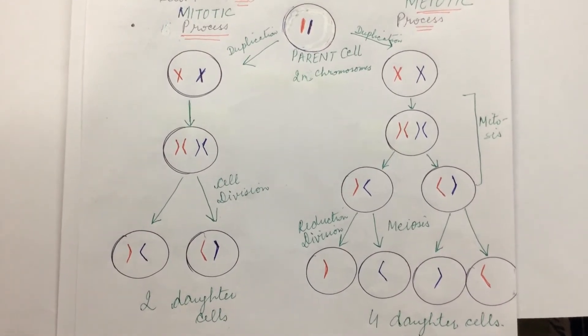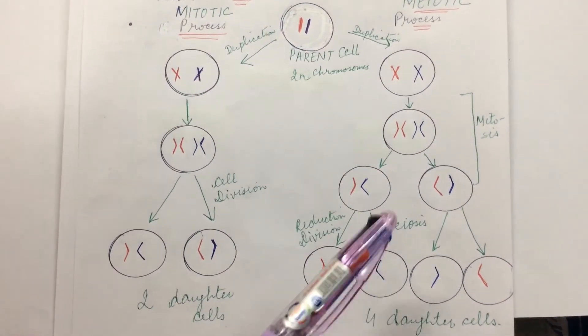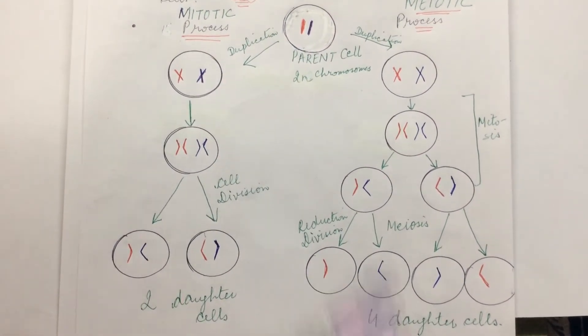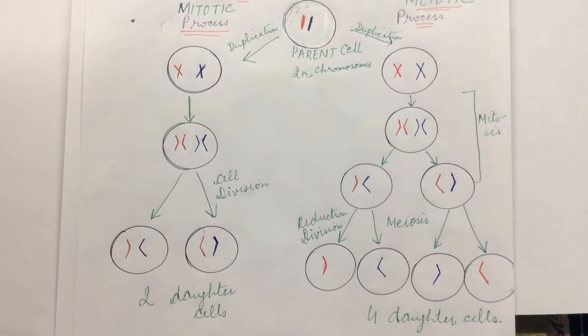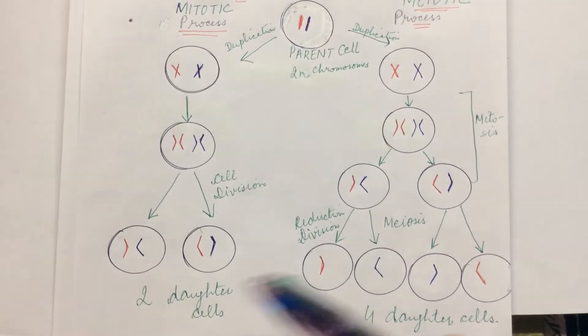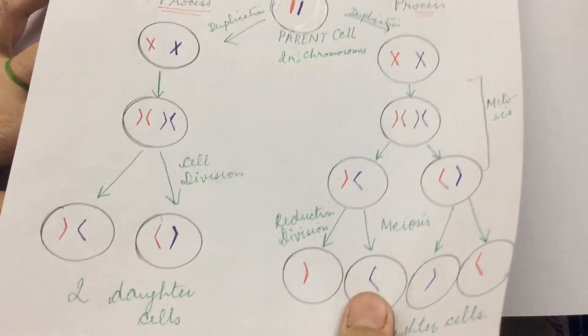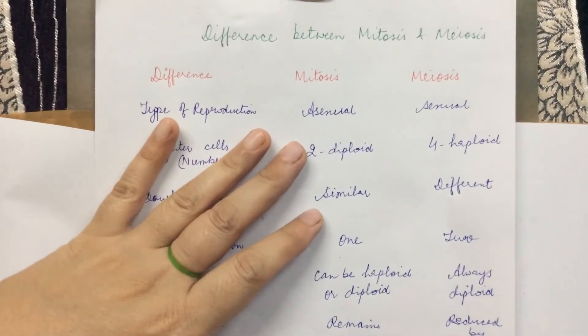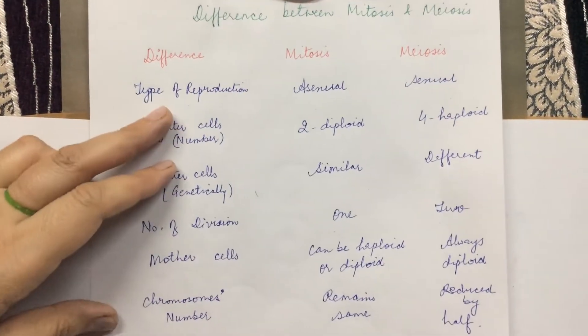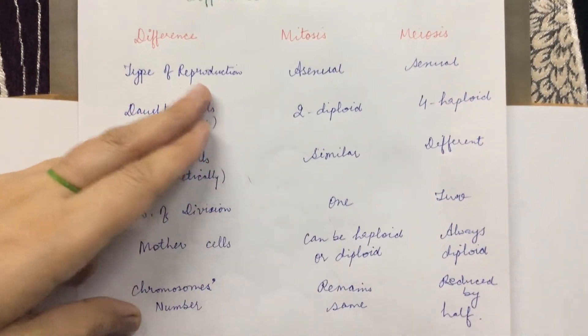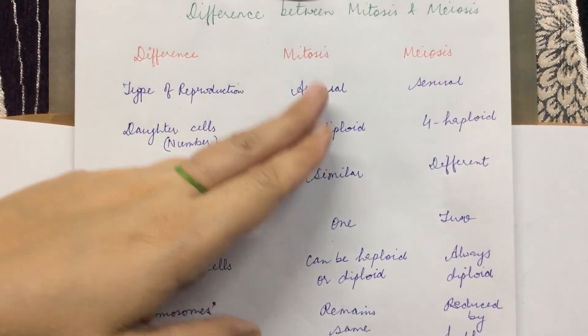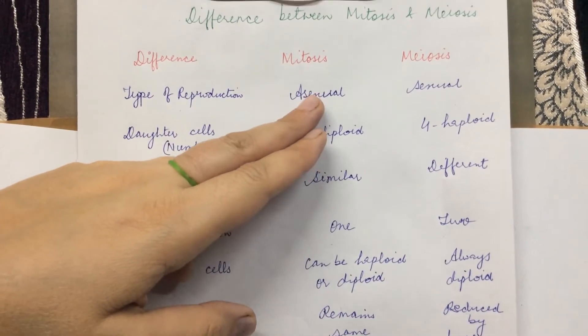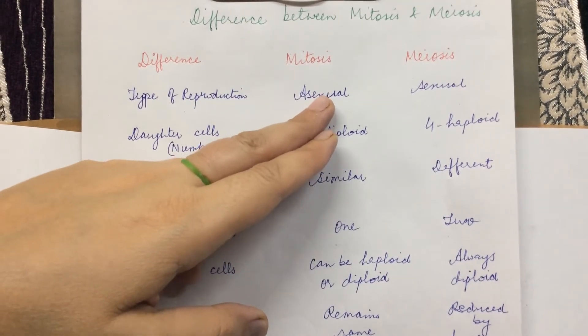Meiotic division is therefore very important in sex cells or gametes or germ cells, to maintain the same chromosome number by the end of the reproduction process. Now let's briefly discuss the differences between mitosis and meiosis. In terms of type of reproduction: mitosis is asexual reproduction because it takes place in somatic cells and unicellular organisms where sex cells are not involved, but meiosis is a sexual type of reproduction.